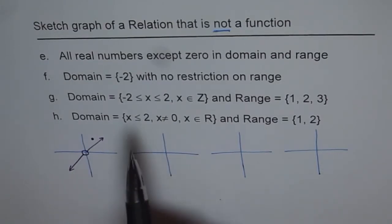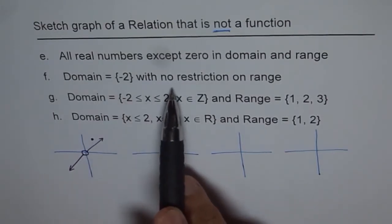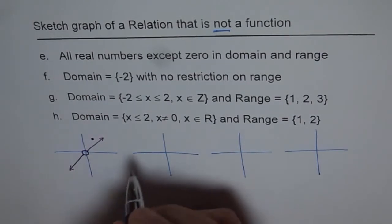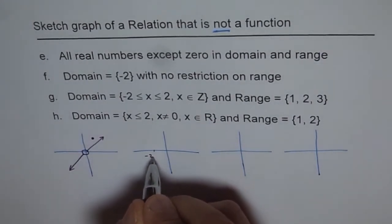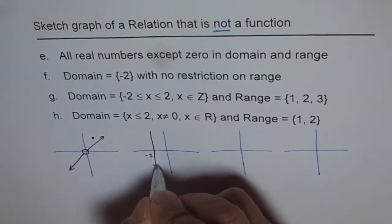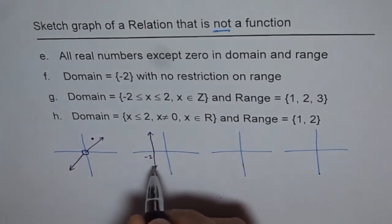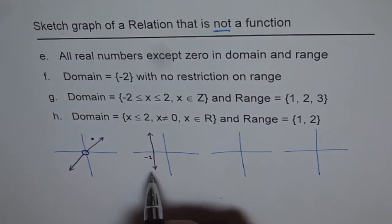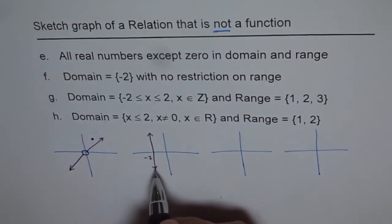Now F is domain equals {-2} with no restriction on range. That means domain has -2 in it. So the only solution could be a vertical line which is x equals -2. That satisfies this condition. Domain is -2 and range is all set of real numbers.